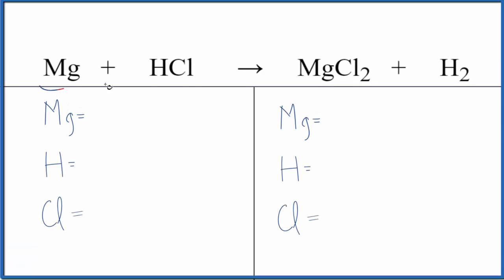Let's write the balanced equation for Mg plus HCl. This is magnesium plus hydrochloric acid. We'll also look at the type of reaction and write the states.